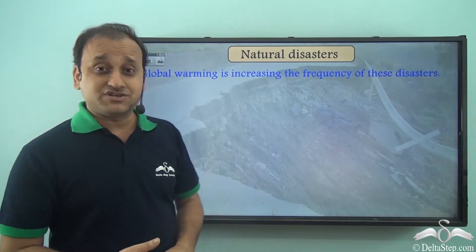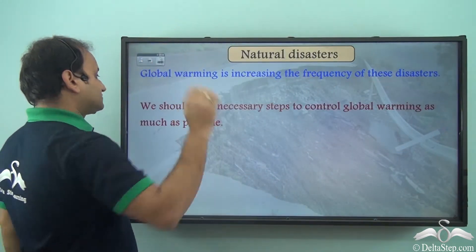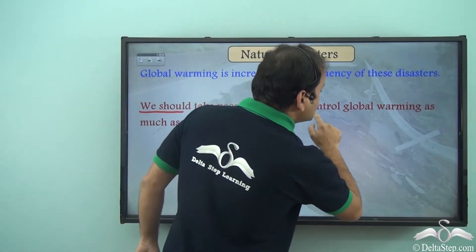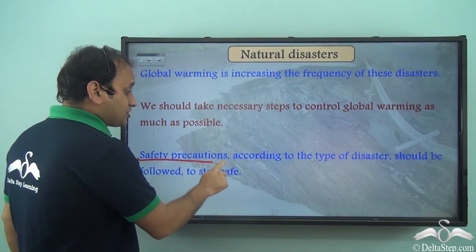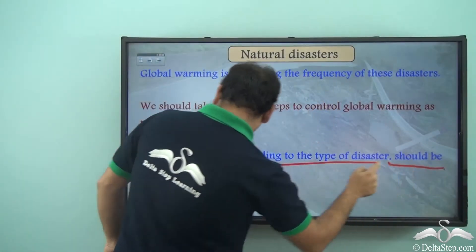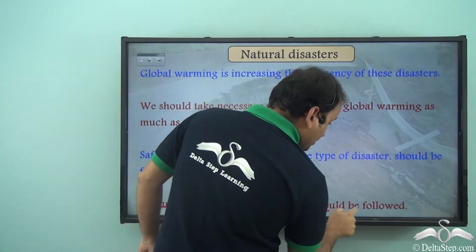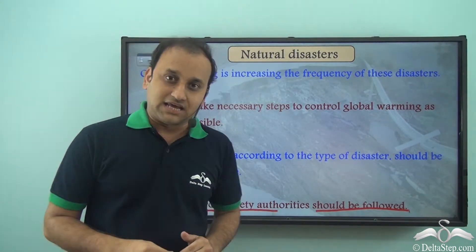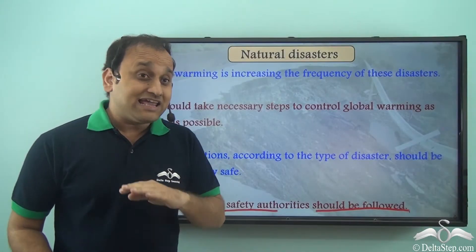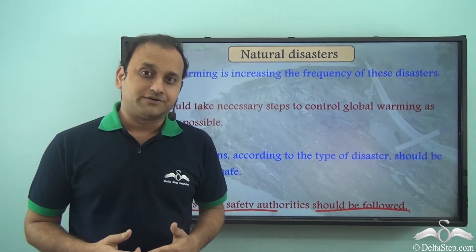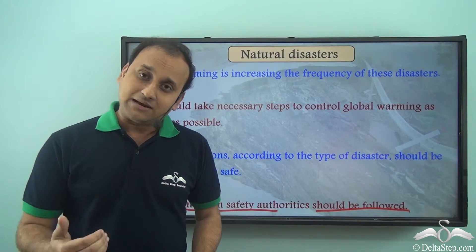Global warming is increasing the frequency of these disasters, so we should take necessary steps to control global warming as much as possible. Safety precautions according to the type of disaster should be followed to stay safe, and instructions from safety authorities should be followed. Once we follow all these steps, we will be able to better prepare ourselves against natural disasters. We definitely cannot control natural disasters altogether, but by taking these steps, we can protect ourselves and also make sure that the frequency of natural disasters can be decreased.